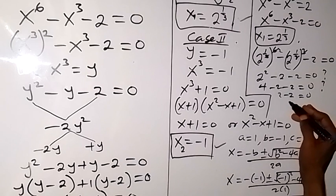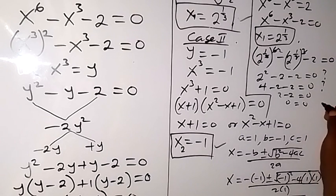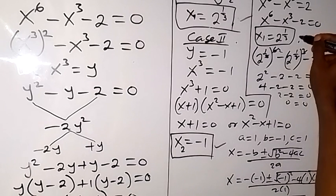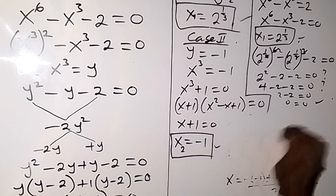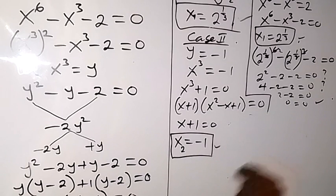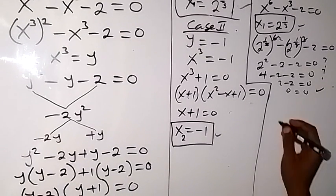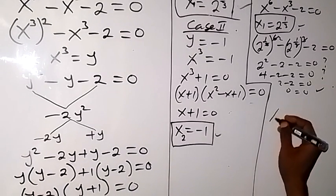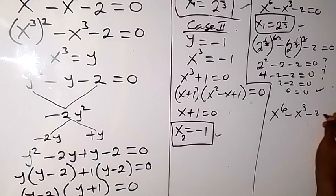That confirms x equals to 2 raised to power 1 over 3 is a solution. We can also check for the second value of x, that is x equals to minus 1. So we have x raised to power 6, minus x raised to power 3, minus 2, equals to 0. Let's check whether this gives us 0.